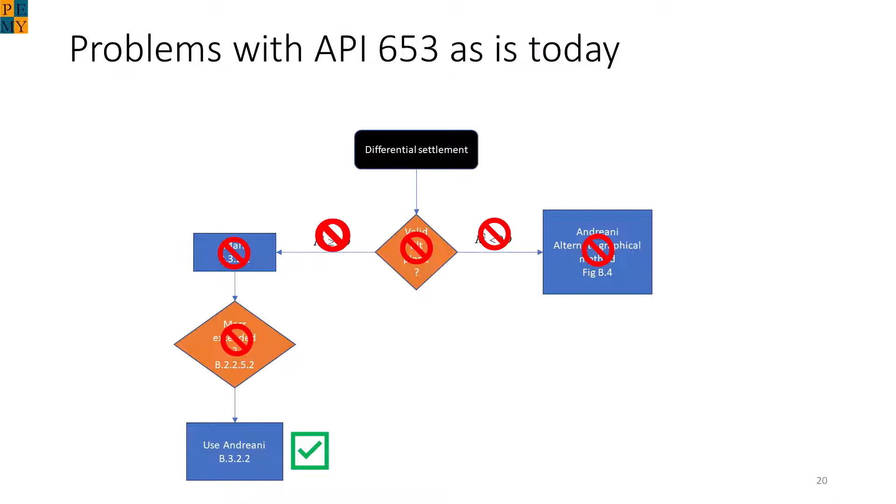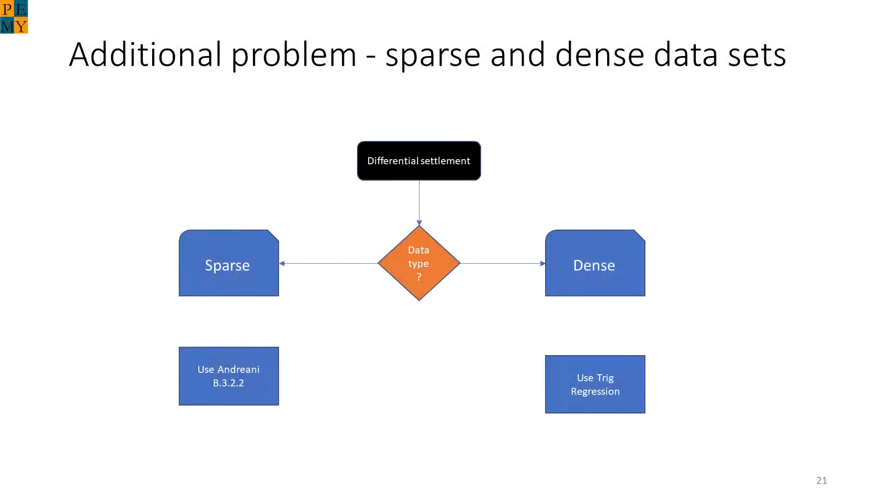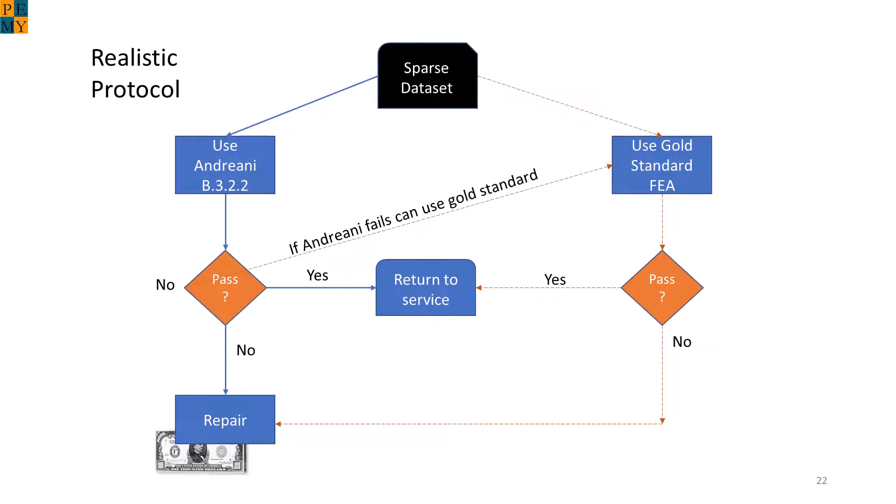The only item that should be preserved is the Andriani method given in B.3.2.2. As mentioned, we want to be able to deal with sparse or dense data sets. Here is a proposed protocol that will fix all of these problems. Note that R-squared is not involved and you can go directly to the Andriani analysis. If it does not pass, then you could use the gold standard, which is FEA, or you could just repair the tank. Note that while you could go directly to the gold standard, this is not done as frequently as the inspection companies typically have to contract someone else to do the FEA, and the time involved to produce the report would be longer. But the light brown dotted line shows that you have a choice.